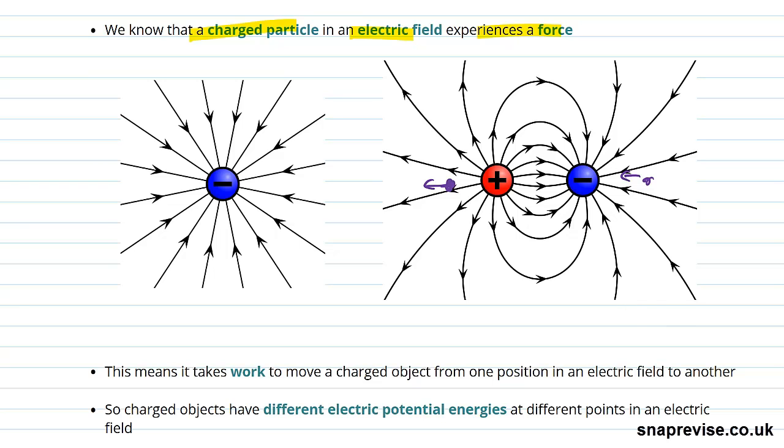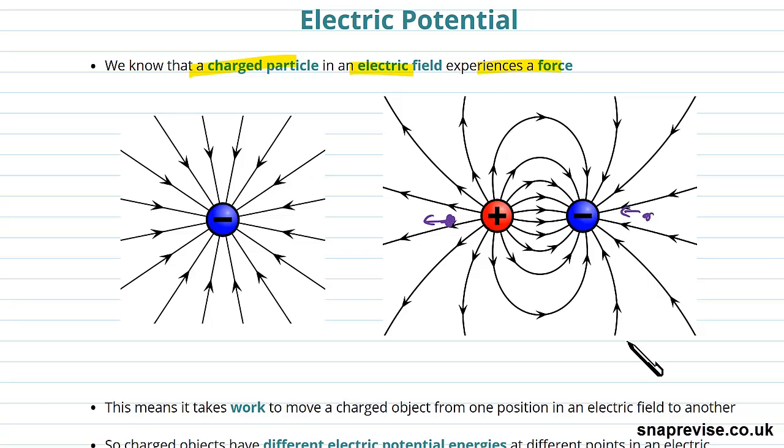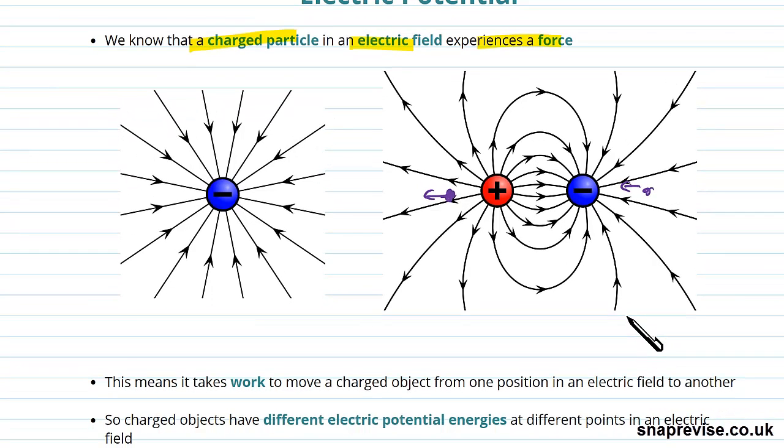So knowing this, knowing that a charge in an electric field experiences a force, we know that if you have to move things against a force, you do work on them, or equivalently if they are moved due to a force, they have work done on them. And this means that it takes work to move a charged object from one position in an electric field to another. You have to do work against the electric field to push.